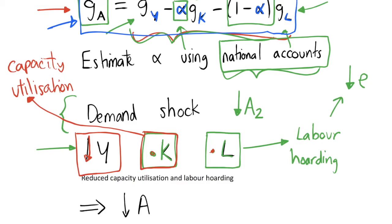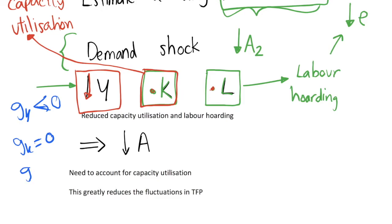So the only thing that can change is this GA, the Solow residual, as is shown here. What we conclude from this is that we have a reduction in our productivity parameter or our total factor productivity or the Solow residual. So our GY is negative or we could say it's less than zero, our GK we'll say is equal to zero, GL is equal to zero, so that means that GA is less than zero.